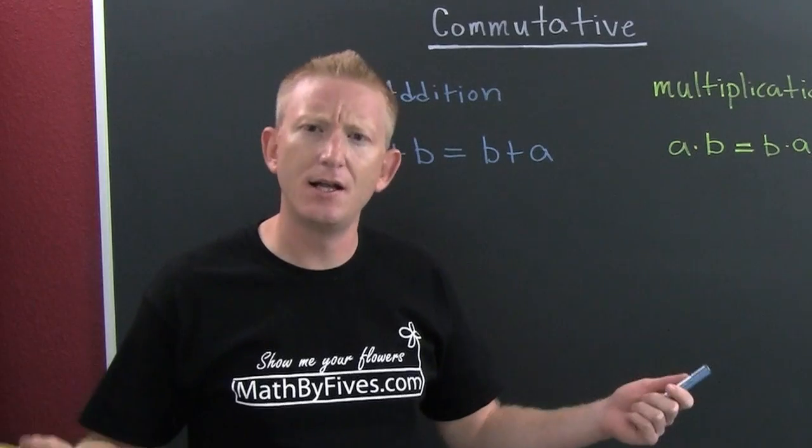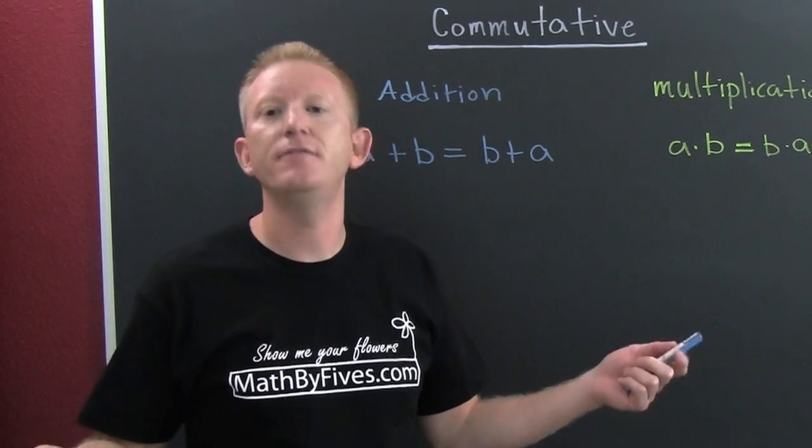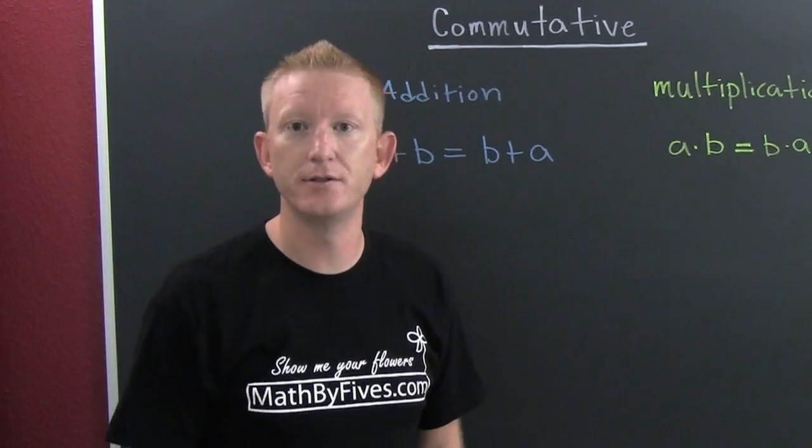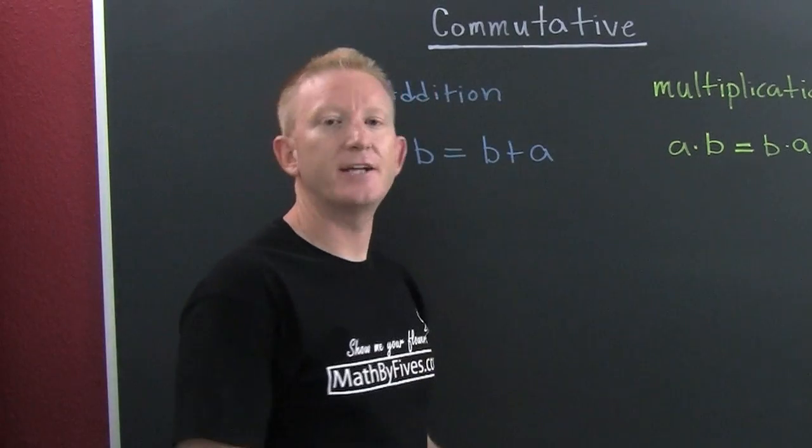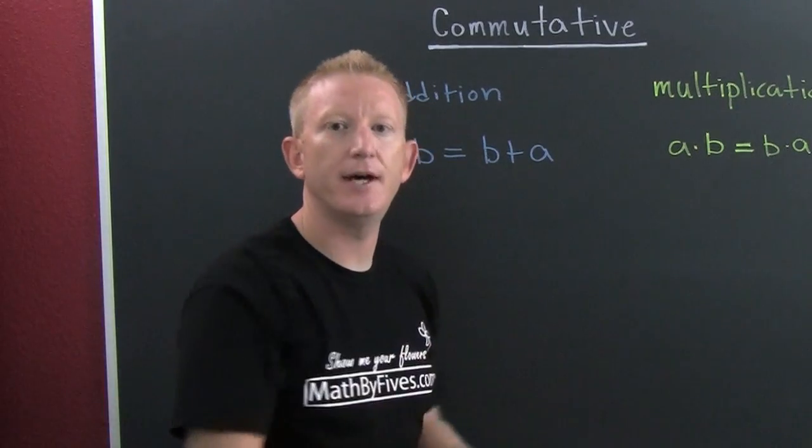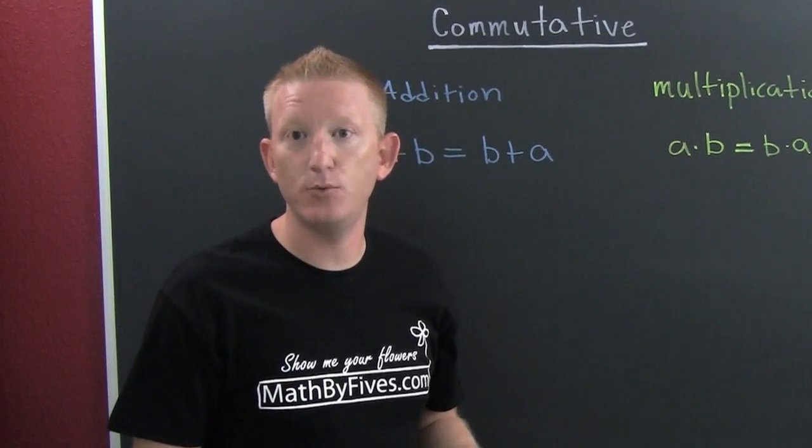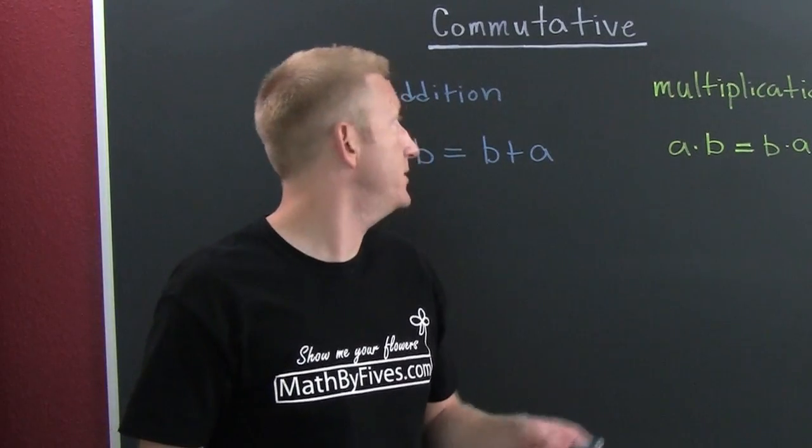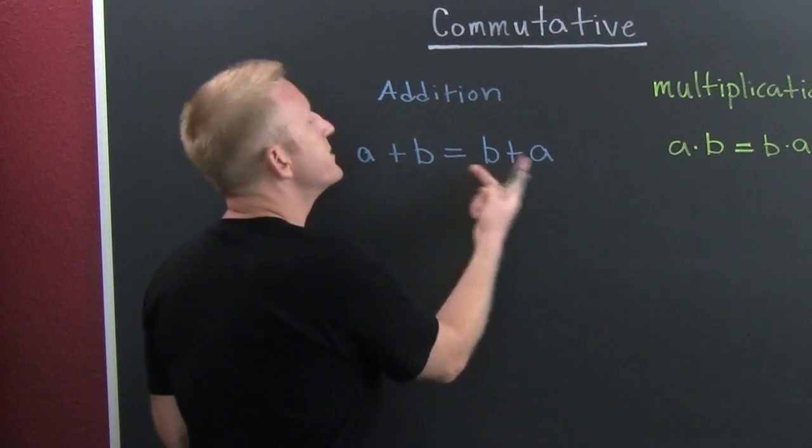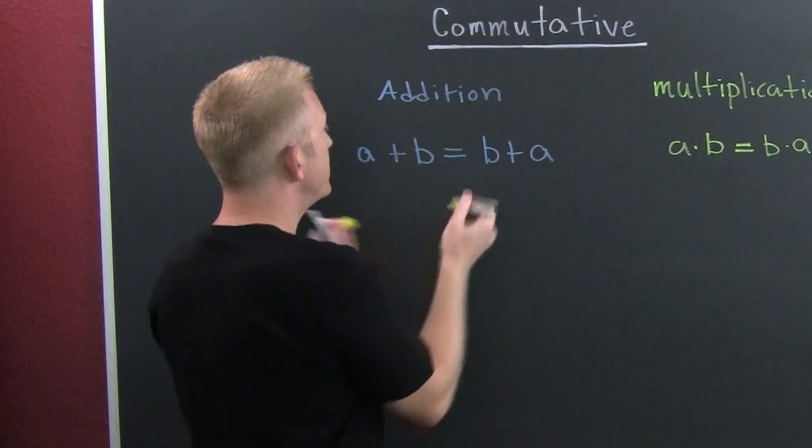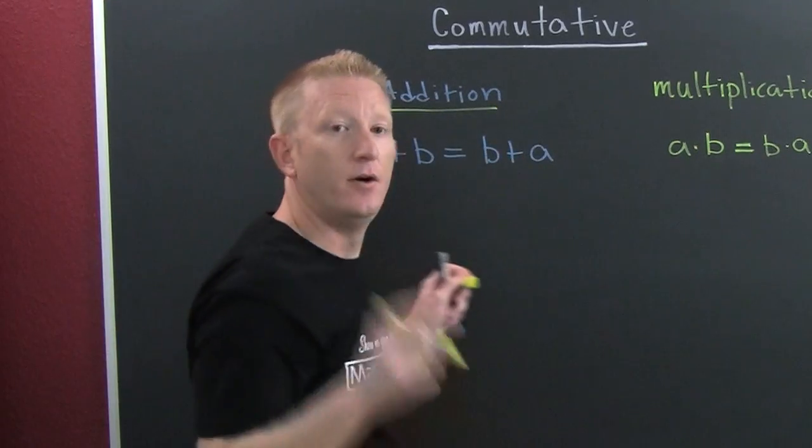With this commutative property, we can actually commute those two. Like if you were going to work, you're going to commute - you're going to go from one place to another. With this commutative property, what we do is we move them, we commute them, we actually switch the order.